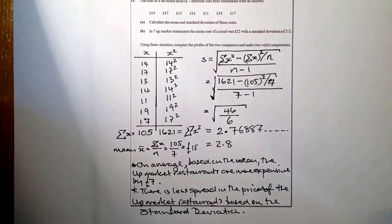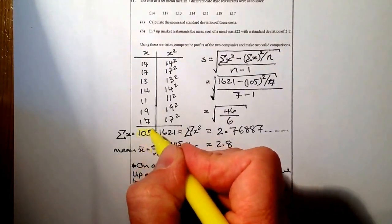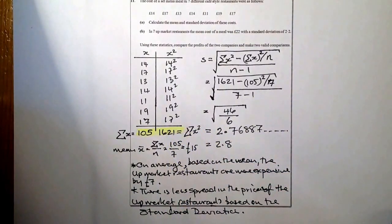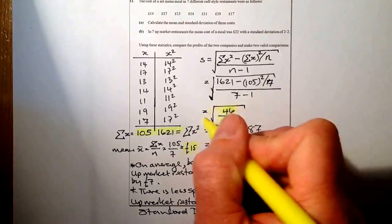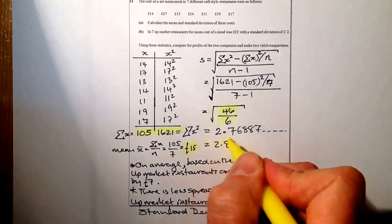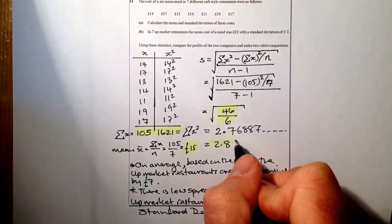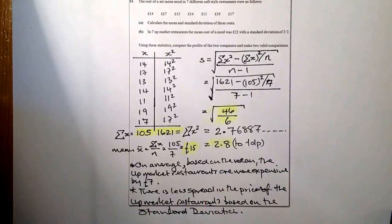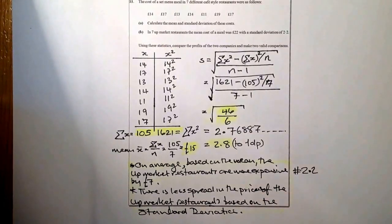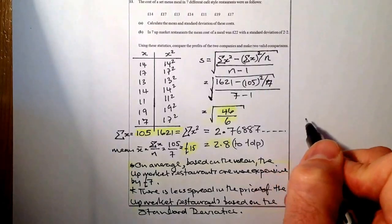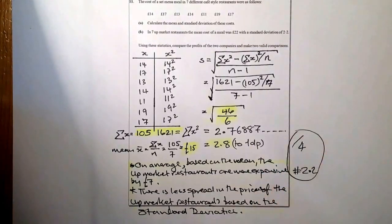Let's see how we mark this. One mark for getting the sum of all x's and sum of all x squareds. One mark for calculating the mean of £15. One mark for substituting correctly into the formula. One mark for getting the standard deviation of 2.8. And one additional mark for communication and relating the answer to context — that's a 2.2 outcome mark. So four marks plus one.